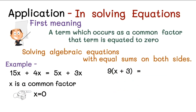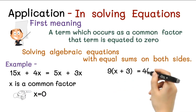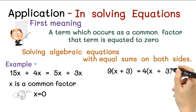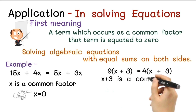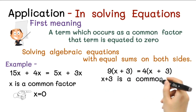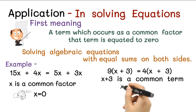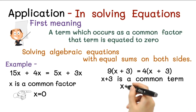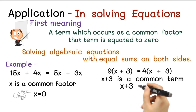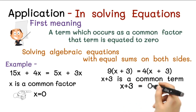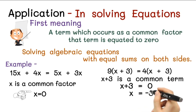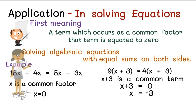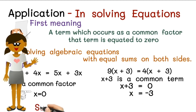The second example is: 9(x + 3) = 4(x + 3). Here you can see (x + 3) is a common term on both sides, so we can equate (x + 3) with 0. So we get x = -3. In this way we can solve these equations using the Shunyam Sammya Sammuchaye sutra.